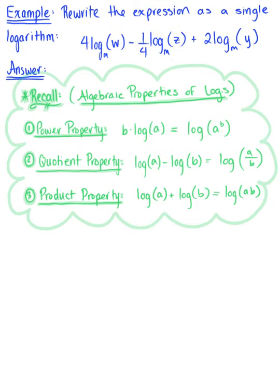So looking at our given logarithmic expression here, notice how each one of the three logarithms has a constant out in front. We have the constant 4 in front of the first logarithm, the constant 1 fourth in front of the second logarithm, and the constant 2 in front of the third logarithm. So we need to apply the power property.